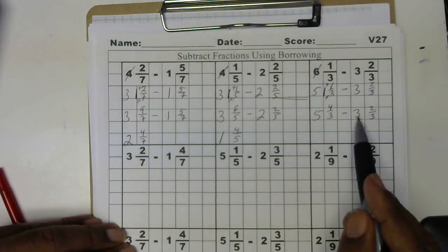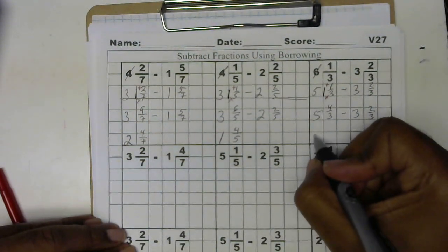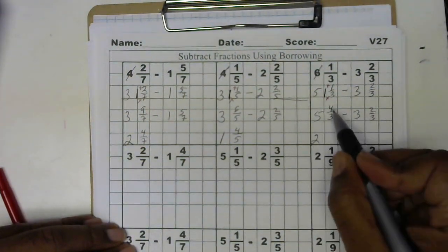Now we can subtract. 3 from the 5 leaves 2. And 2 from 4 leaves 2. And that's all over 3.